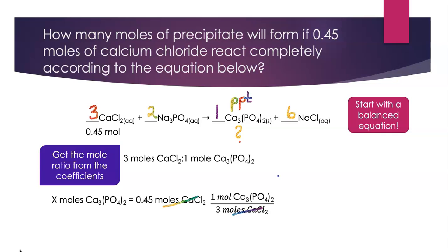That means the unit of moles of calcium chloride cancels, leaving me with what I want. So I effectively need to divide 0.45 by three. And so I get an answer of 0.15 moles of calcium phosphate.